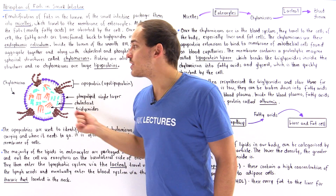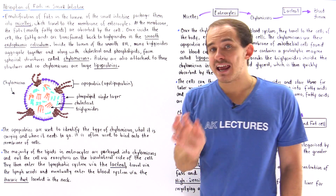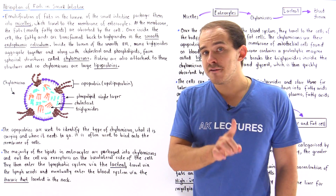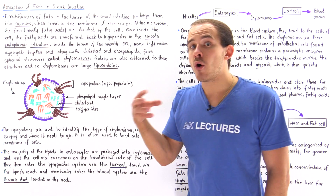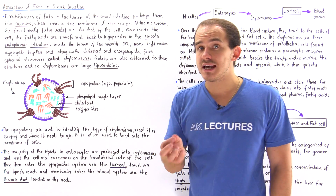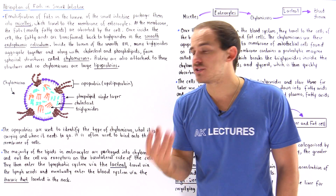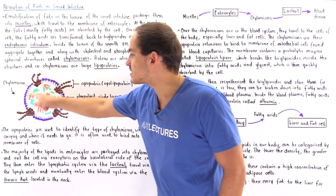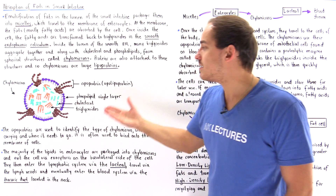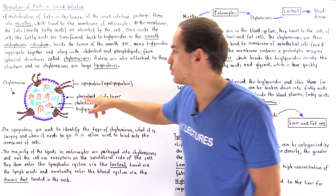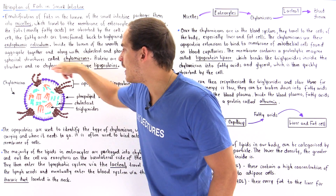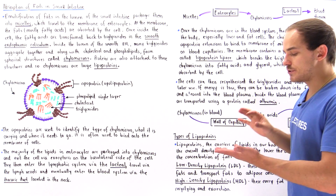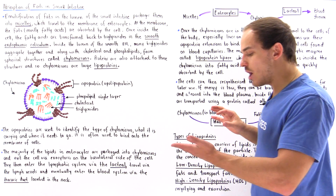The chylomicron is not a molecule but a particle, and the difference is that a particle consists of thousands of different molecules. Inside we have thousands of fat molecules, phospholipids, and proteins.